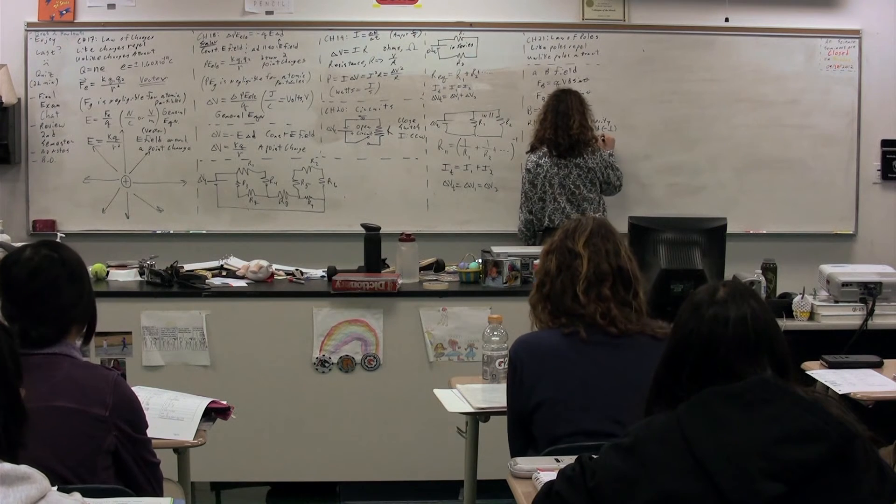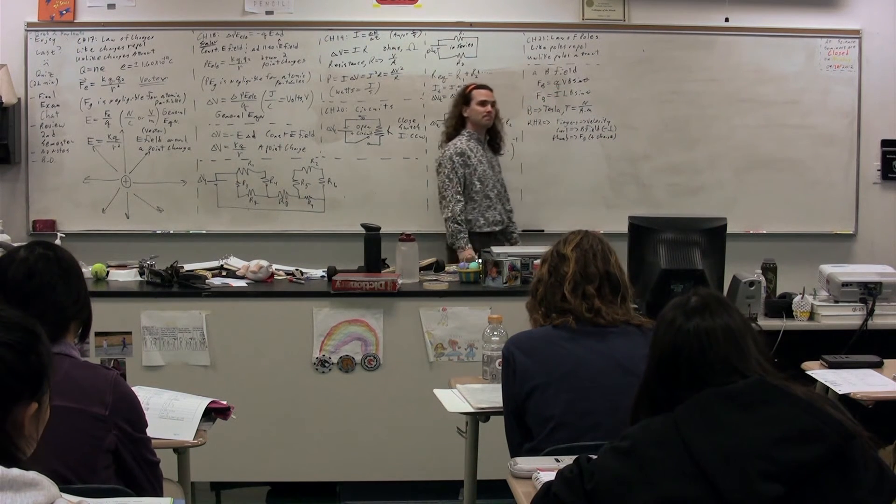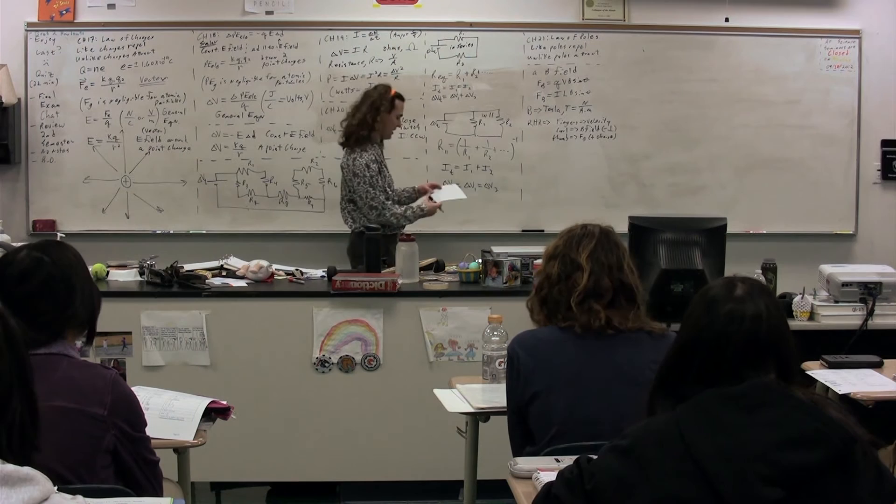And then your thumb points towards the magnetic force on a positive charge. For a positive charge. What about a negative charge? 180 degrees. 180 degrees from the direction of your thumb.